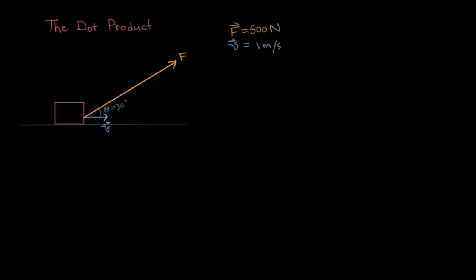Let's consider a physics example. In physics, power is the rate at which work is done. Or in other words, the force times the speed. More specifically, the dot product of the force and the velocity. Consider this example here.